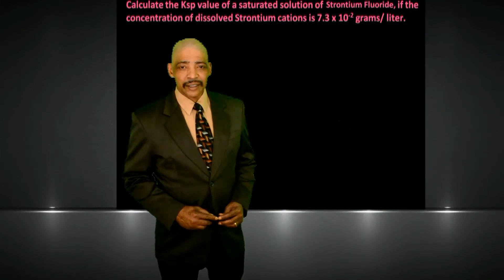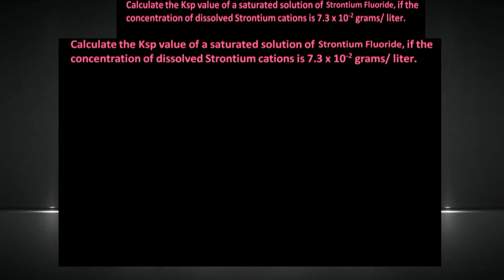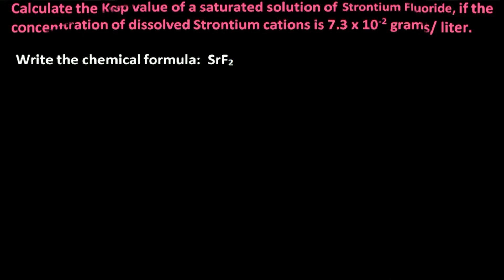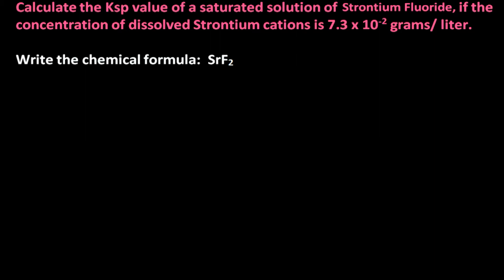Let's begin with a simple calculation to determine the KSP value of strontium fluoride. Calculate the KSP value of a saturated solution of strontium fluoride if the concentration of dissolved strontium cations is 7.3 times 10 to the minus 2 grams per liter. The chemical formula for strontium fluoride is SrF₂.